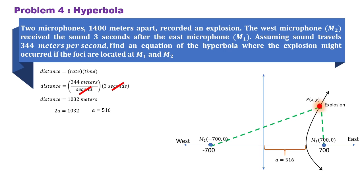So a would be the distance from the center to a vertex. And we can also say that the c distance would be the center to a focus, and that would be 700. In the standard form of the equation of a hyperbola, we need a squared and b squared. So to solve for b squared, we can have c squared minus a squared. Substituting the given values, we have 490,000 minus 266,256, giving us b squared is equal to 223,744.